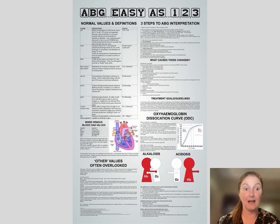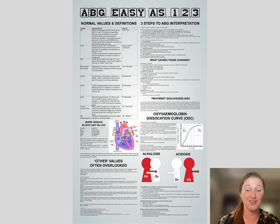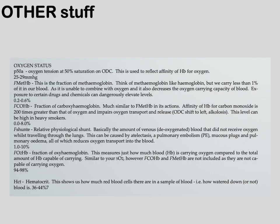This is a fantastic poster I love — ABG easy as one, two, three — that you can download off the internet for free. You can laminate it and put it near the blood gas machine so that you and your juniors can remember blood gas interpretation. I like this poster because it not only takes you through how to read a blood gas and interpret the acid base basis, it also discusses other stuff that is often forgotten — like the oxygen tension, fraction of methemoglobin, fraction of carboxyhemoglobin, shunt, and hematocrit.